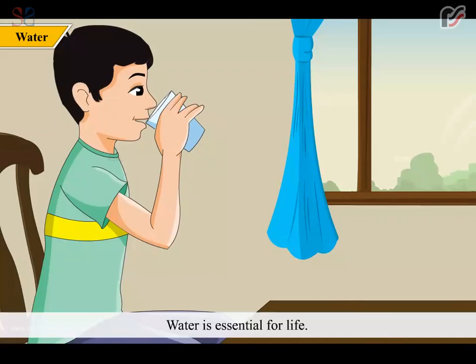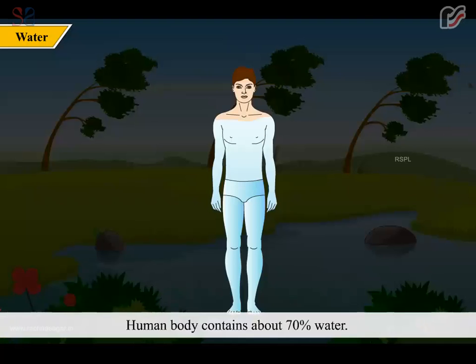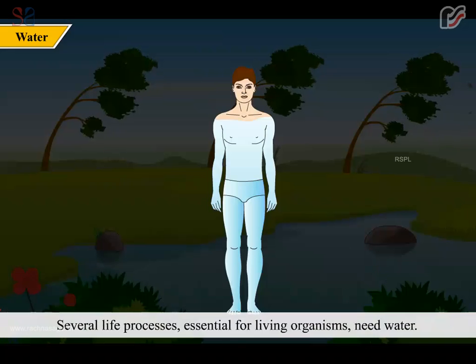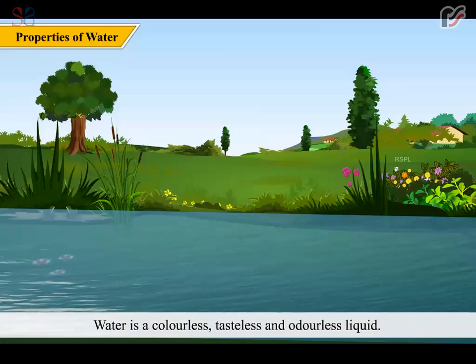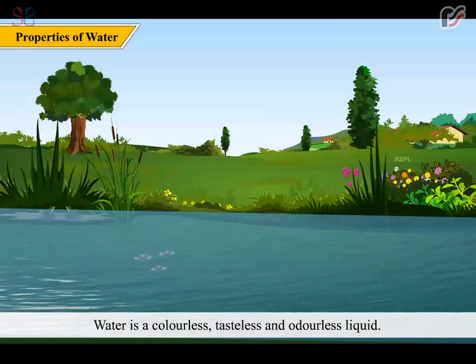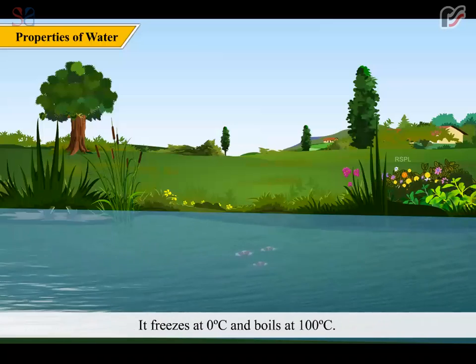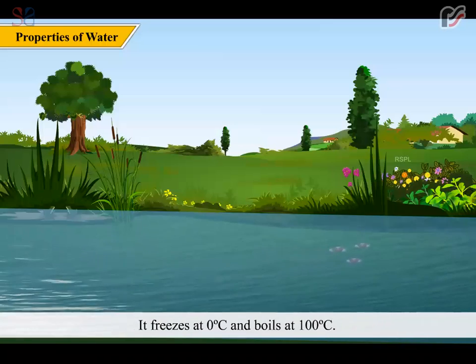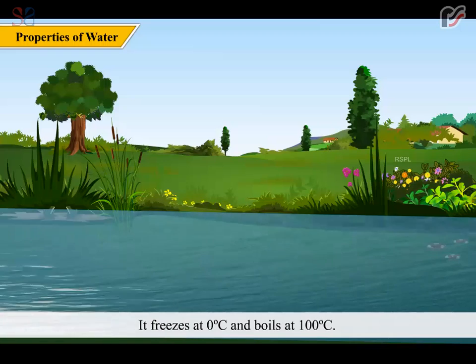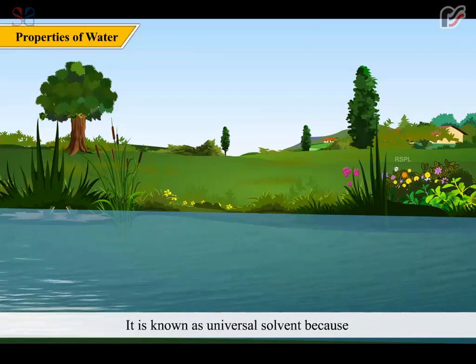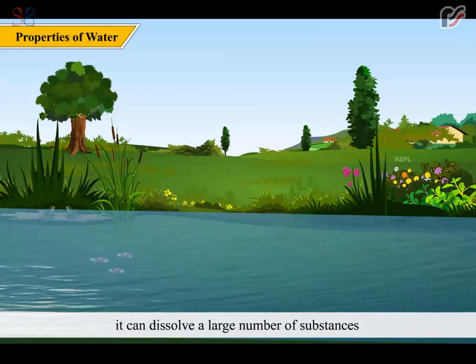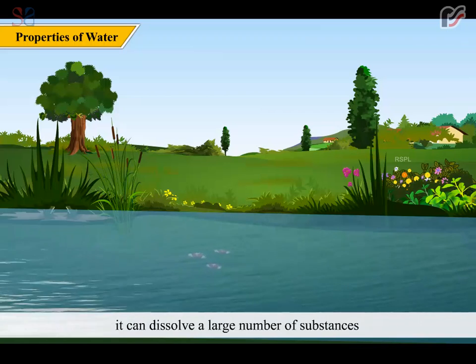Water is essential for life. We cannot live without it. Human body contains about 70% water. Several life processes essential for living organisms need water. Water is a colorless, tasteless and odorless liquid. It freezes at 0 degree Celsius and boils at 100 degree Celsius. It is known as universal solvent because it can dissolve a large number of substances.